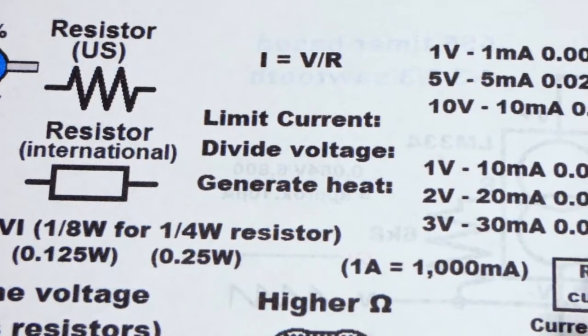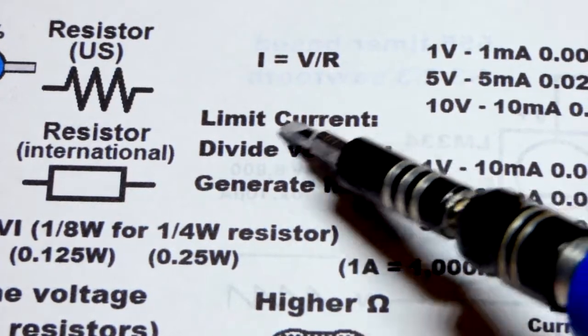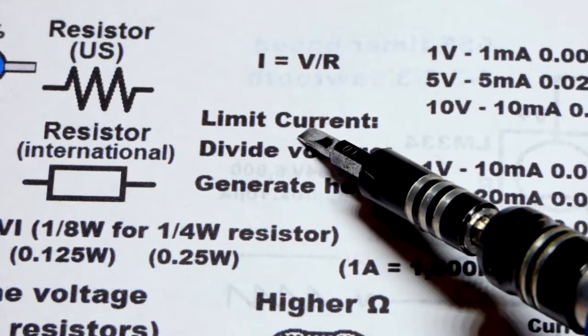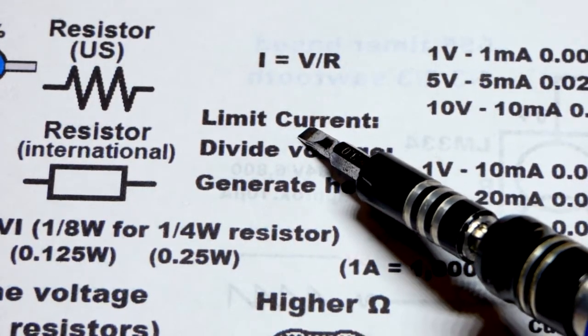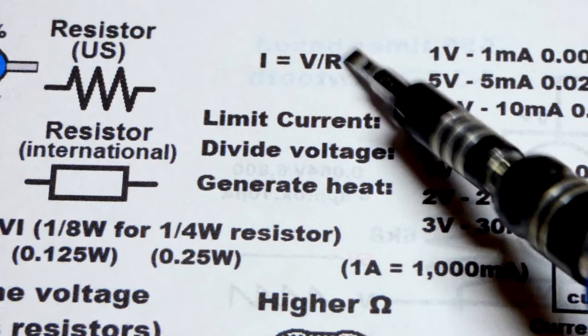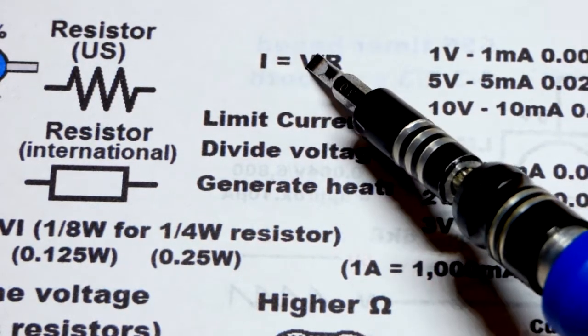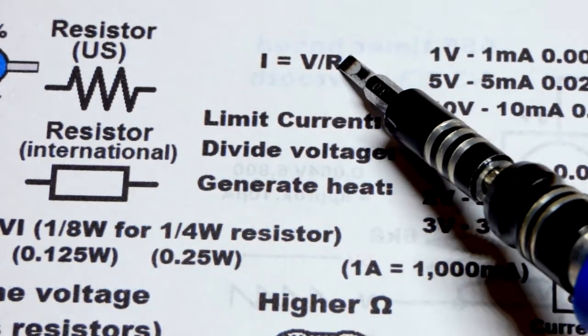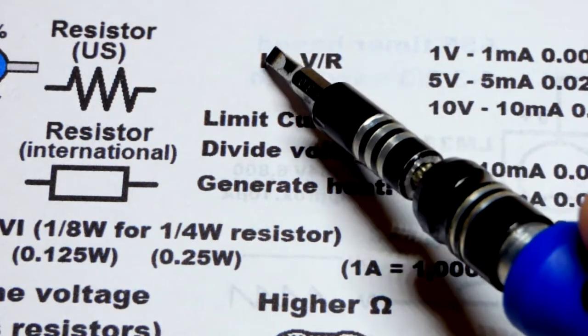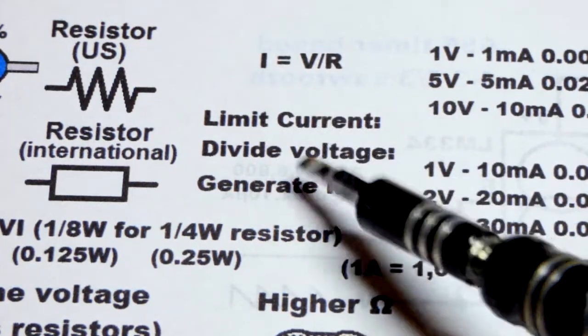Really quickly, we're going to talk about the three basic things that they do. First off, they limit current. That's why they're resistors. Their electrical property is that the current going through them is the voltage across them divided by their resistance. So as resistance goes up, you'll have less current. It limits current.